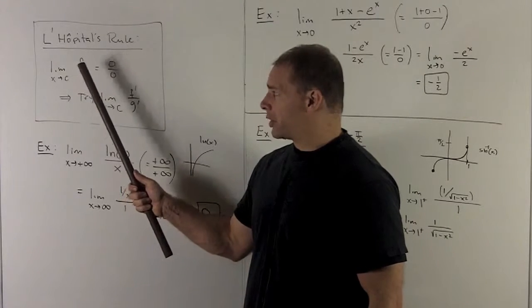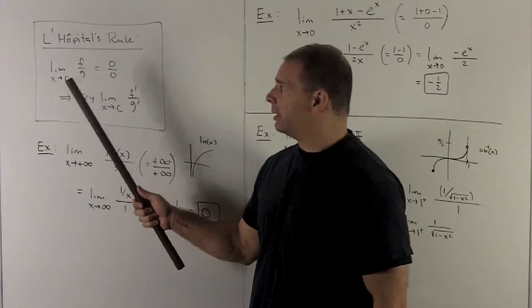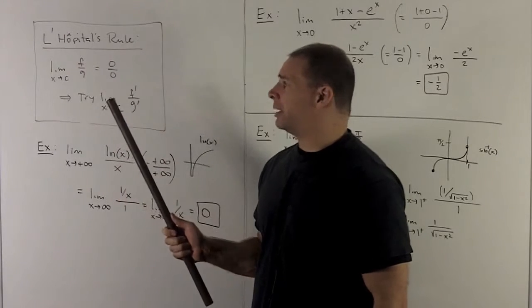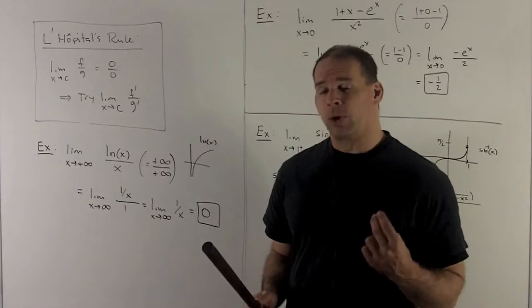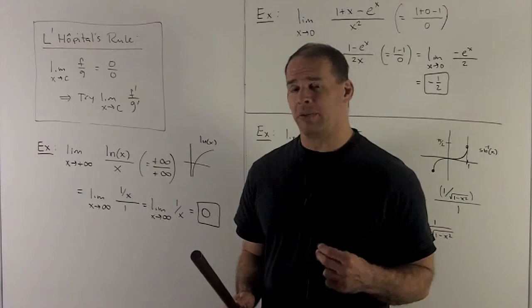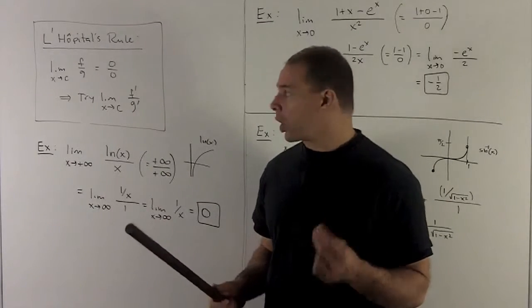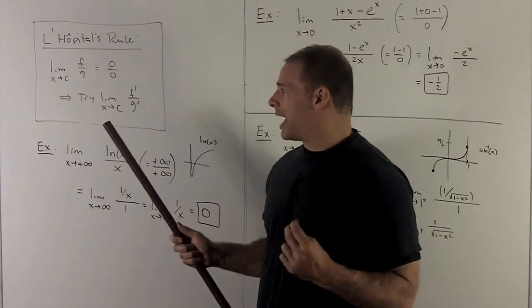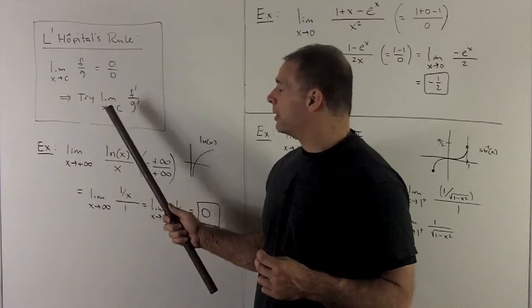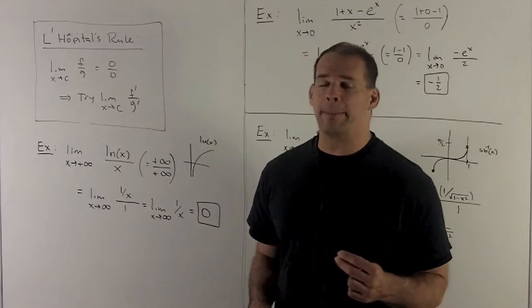we're going to take limit of a function f over g as x goes to c. We're going to get 0 over 0, or plus minus infinity over plus minus infinity coming out. That means we need to do more work. So L'Hôpital suggests trying limit x goes to c of f prime over g prime.